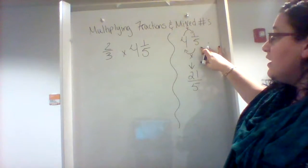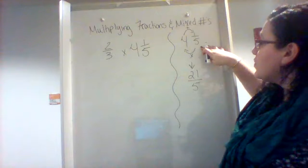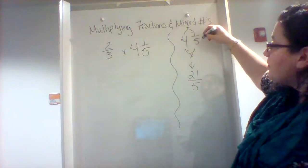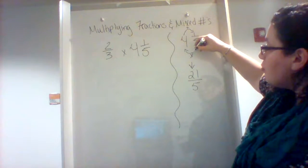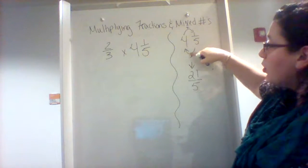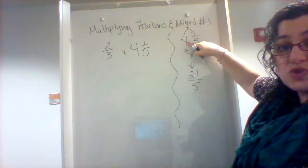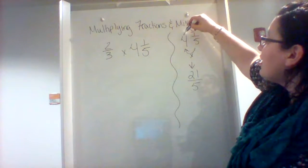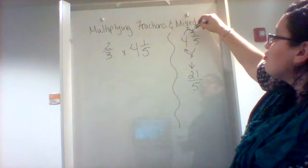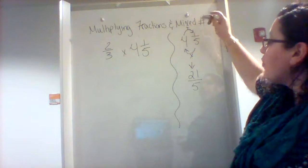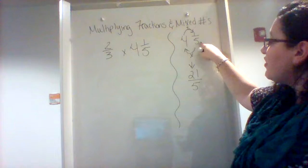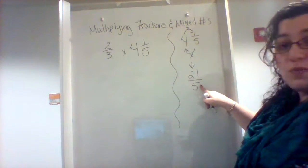And over on the side here, I have showed you how to change it. So if we have 4 and 1 fifth, we take the denominator, you multiply it by the whole number. So 4 times 5 is 20, and you take that 20 and you add it to the numerator. So 20 plus 1 is 21. So 4 and 1 fifth as an improper fraction is 21 fifths.